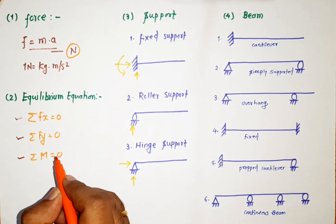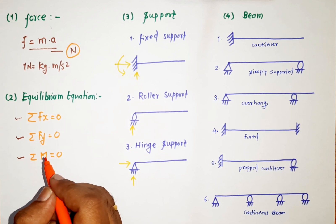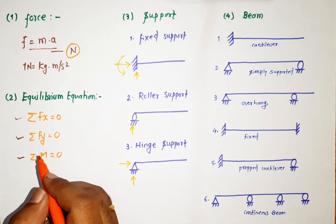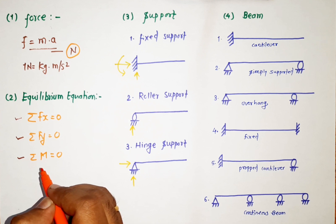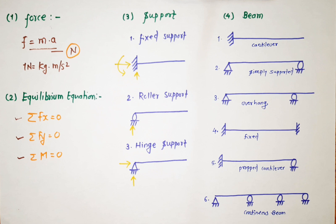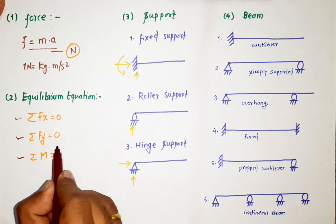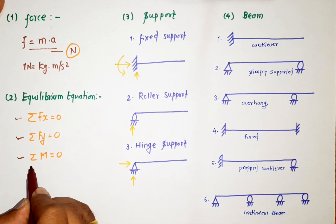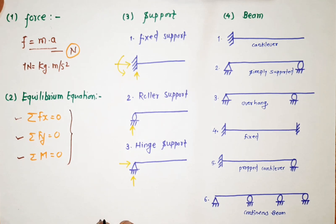Our second concept is the equilibrium equation. On each structural member, forces are acting and we need to balance those forces so that the structural member will be in a stable condition. There are three equilibrium equations: summation of Fx = 0, summation of Fy = 0, and summation of moments at any point = 0. When a structural member satisfies all three equations, it will be in equilibrium.